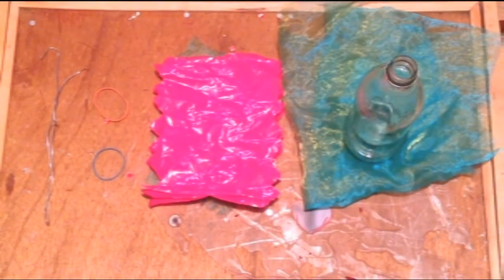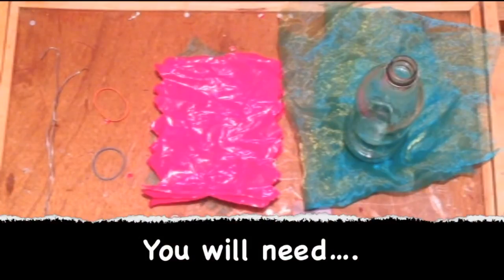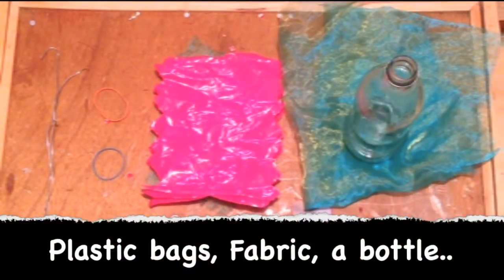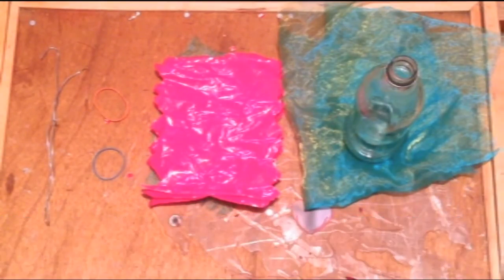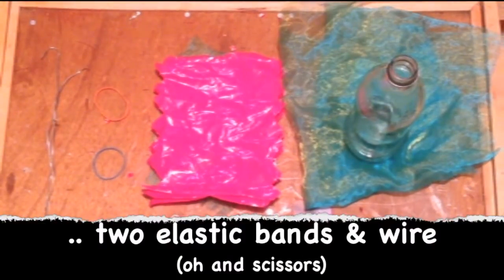Today we are going to show you how to make a pom-pom flower from plastic bags. You will need some plastic bags, some fabric, a glass bottle or plastic bottle, two elastic bands and some wire.